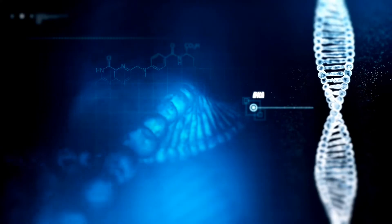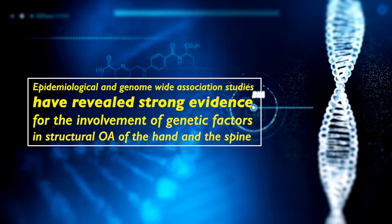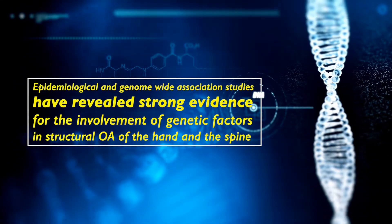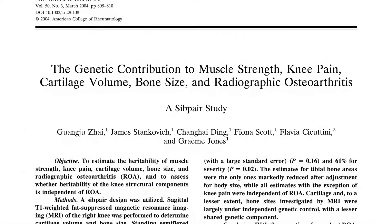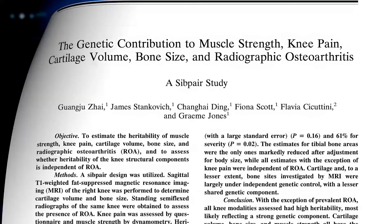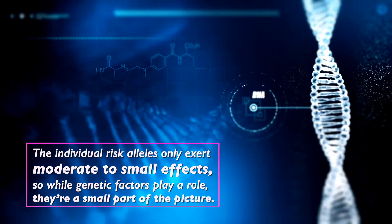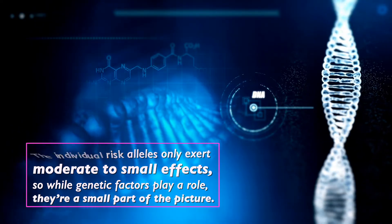Emerging research is showing the role that genetic factors play in the development of osteoarthritis. Epidemiological and genome-wide association studies have revealed strong evidence for the involvement of genetic factors in structural OA of the hand and the spine, but evidence is more inconsistent for the knee. Importantly, the individual risk alleles only exert moderate to small effects, so while genetic factors play a role, they're a small part of the picture.